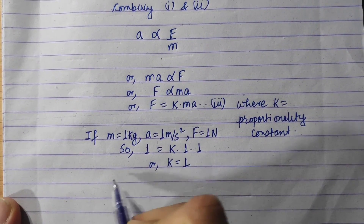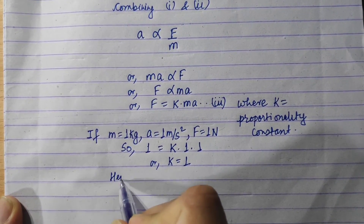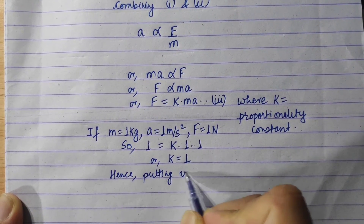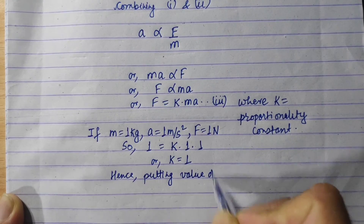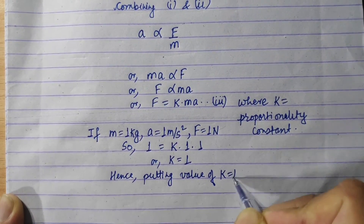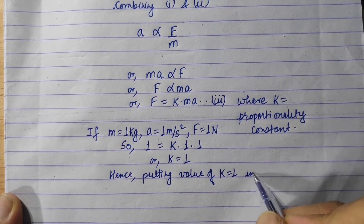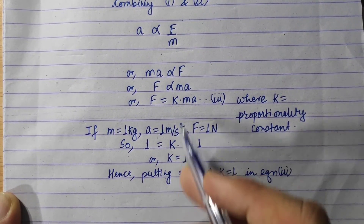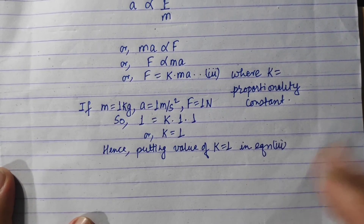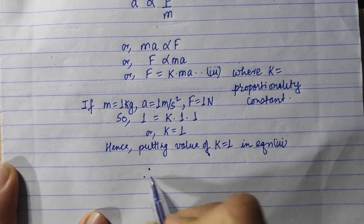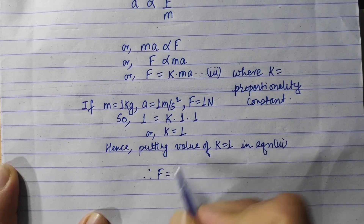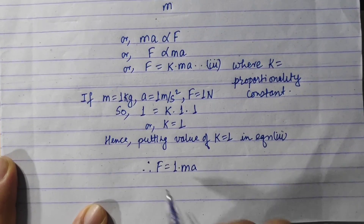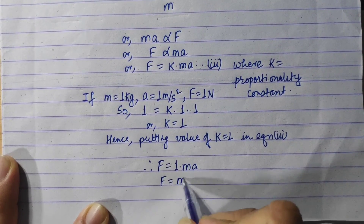Putting the value of k equals 1 in equation 3, therefore F is equal to 1 times mA, or F is equal to mA.